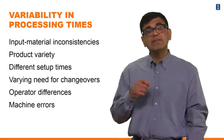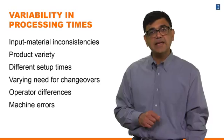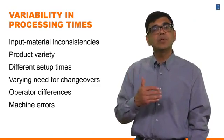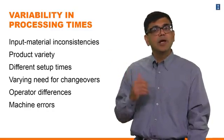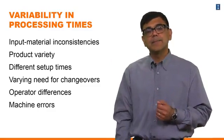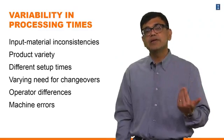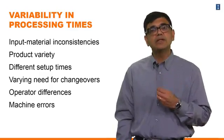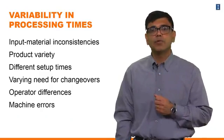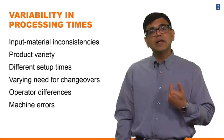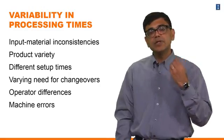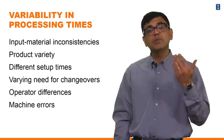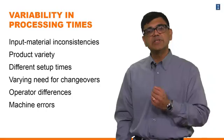There might be inherent differences in the times that different people working on the same task take. An experienced person might be able to do things in less time than a novice, and that will affect how capacity is being used. Finally, any kind of errors — errors by the operator or the machine itself deteriorating and not working at the same rate — the variability you get from the time the machine takes needs to be incorporated when planning for a capacity utilization number.